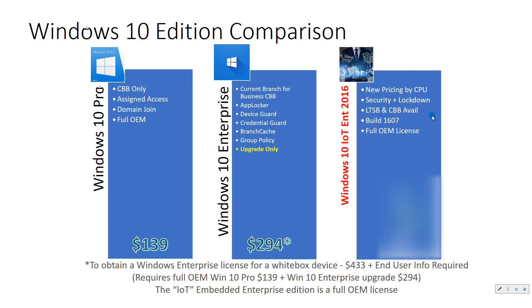Windows 10 Pro on the left is what you can buy on an OEM device — if you get a laptop or system from an OEM, it typically comes with Home or Pro. Pro is the current branch for business, so you're going to get Windows 10 features pushed down to that machine. You only have the ability to defer them for 8 to 12 months, but ultimately those new features are going to come down to that device. If you're an OEM building an appliance, those updates could come down and break your appliance.